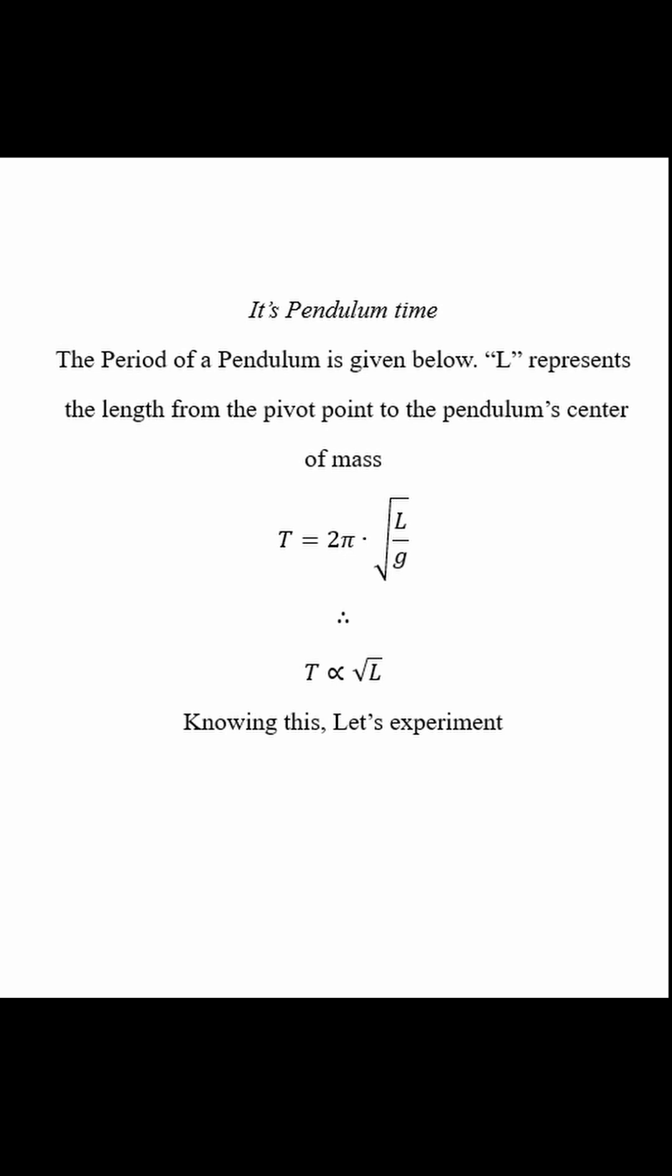To do this, we marked the length of a pendulum at 1, 2, and 3 feet, and recorded the period three times for each length and found the average for higher accuracy.